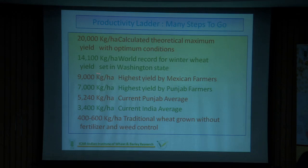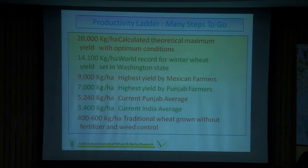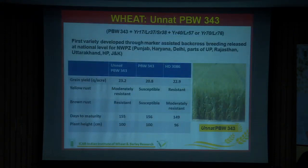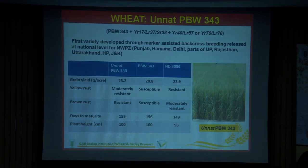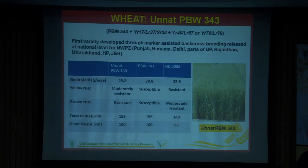In Punjab and Haryana, farmers have harvested more than 7 tonnes. The Punjab average and the India average are improving this year. The traditional Indian tall wheat used to yield less than 4 tonnes. Someone mentioned biotechnology — it has emerged and is still emerging. One classic example is the variety PBW723. This was called UNNAT PBW343 and was released as PBW723 through CVRC. It is the first wheat variety in India developed through marker-assisted selection, released in 2017.